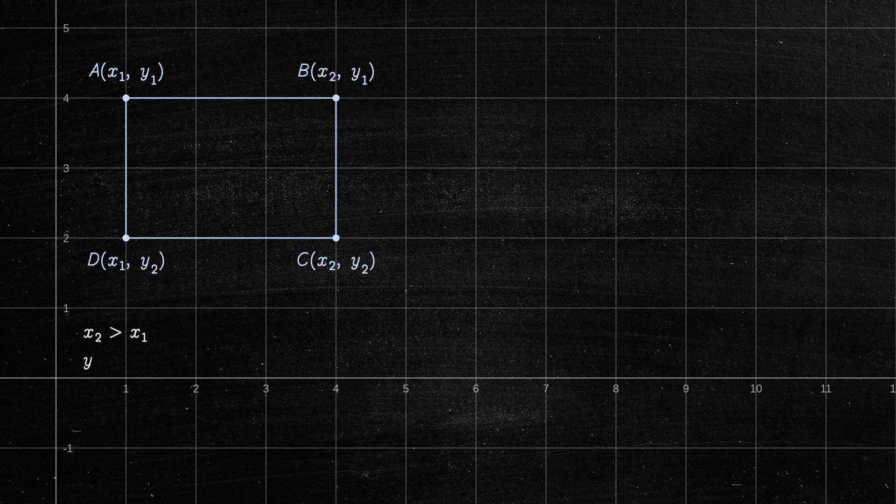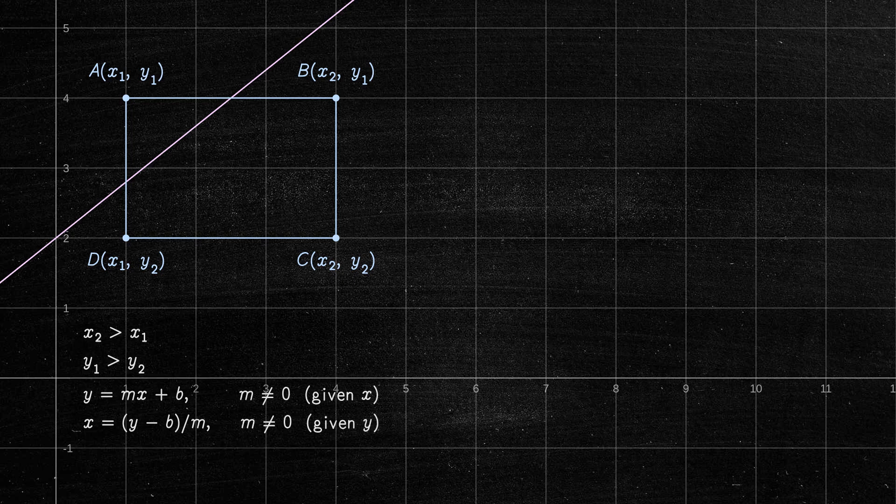Suppose we have an axis-aligned rectangle with the following vertices, and we also have a line in slope-intercept form. Let's assume that this line always goes through the rectangle, splitting it into two parts.